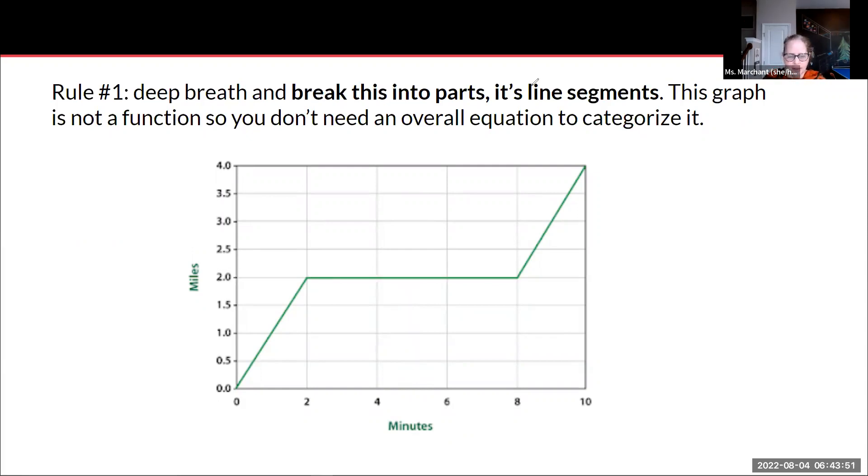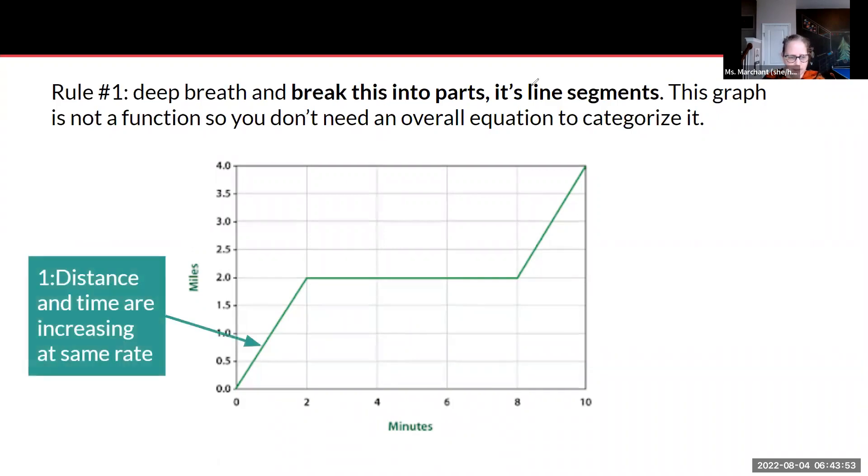So what is line segment one telling us? The distance and the time are increasing, and they're increasing at the same rate because it's a straight line. It's just not straight horizontal or straight vertical. So we have uniform speed and it goes from zero miles to two miles, so a total of two miles.